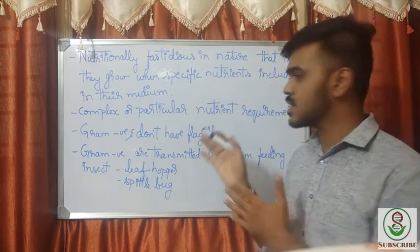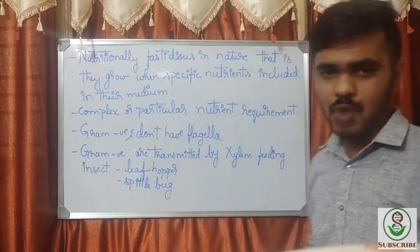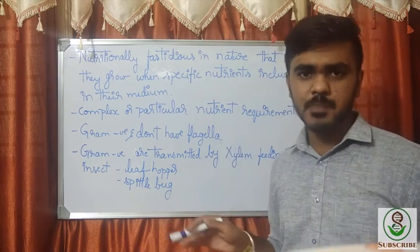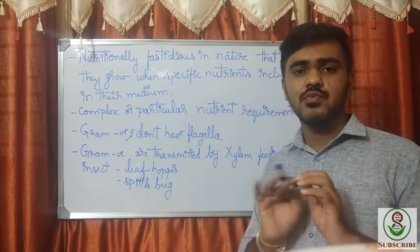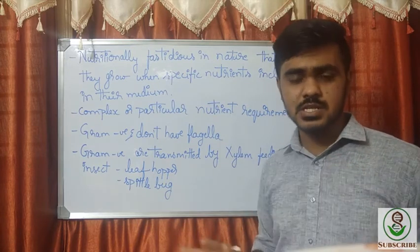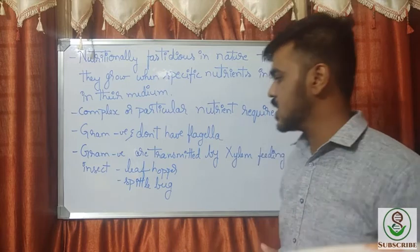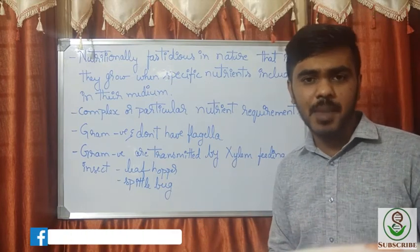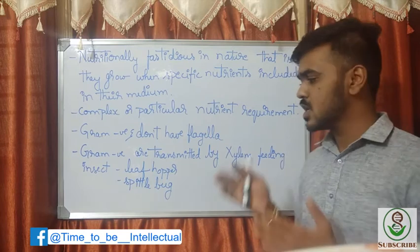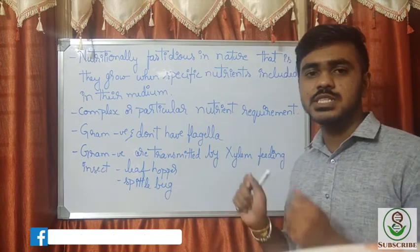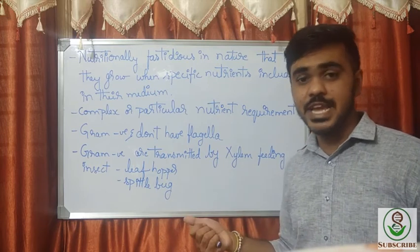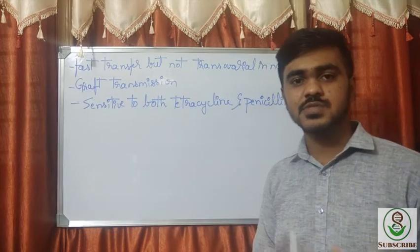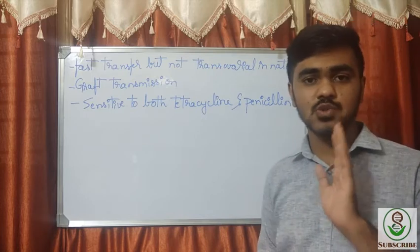XIFB are usually gram-negative, though gram-positive forms also occur. They have no flagella. Gram-positive forms do not have vectors, while gram-negative forms have vectors such as leafhoppers and spittlebugs, which feed on the xylem of the plant. Since these are xylem-inhabiting bacteria, insects that feed on xylem act as vectors for the gram-negative forms.